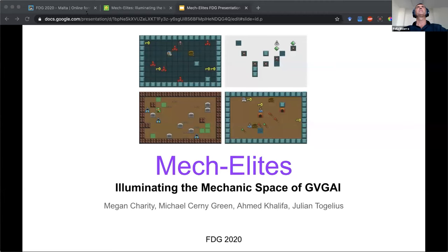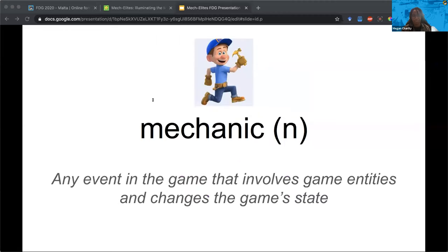Hi, my name is Megan Charity. I'm a PhD student at NYU and this is my paper with co-authors Michael Green, Akhna Khalifa and Julian Tegelius. I'm presenting Mech Elites, which is illuminating the mechanic space of GBGAI games. Before I go further, I want to state our definition for the word mechanic. In the context of this paper, a mechanic is defined as any event in the game that involves game entities and changes the game state.